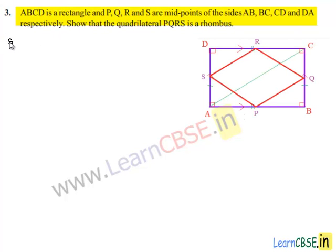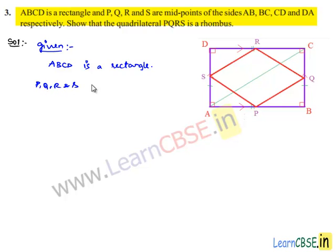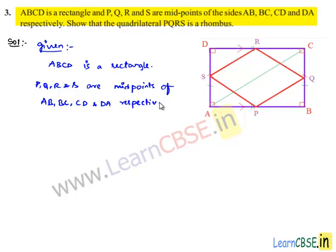Moving on to the solution. Given that ABCD is a rectangle and P, Q, R, and S are midpoints of AB, BC, CD, and DA respectively. We are asked to prove that PQRS is a rhombus.